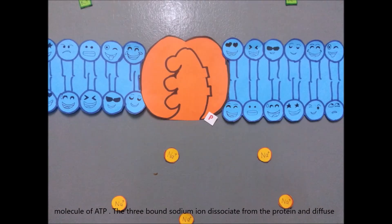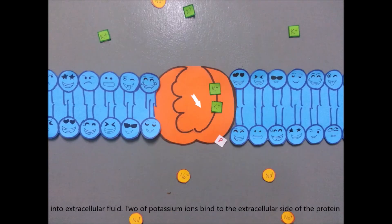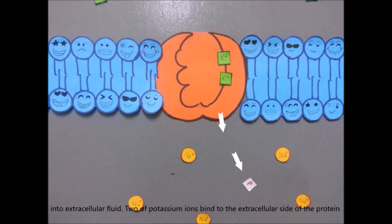The three bound sodium ions dissociate from the protein and diffuse into the extracellular fluid. Two potassium ions bind to the extracellular side of the protein.